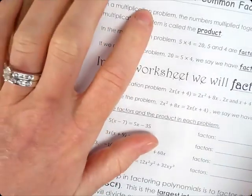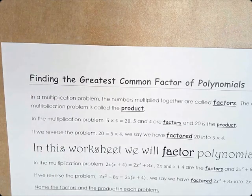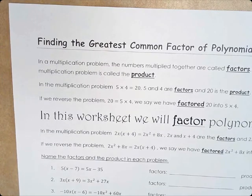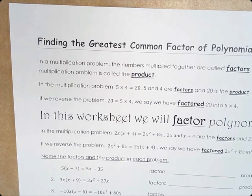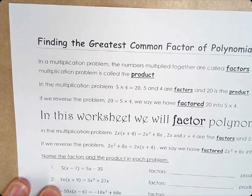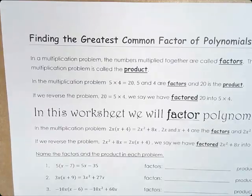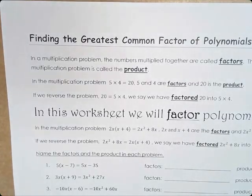So that is what factoring is. We are going to factor out the greatest common factor of a polynomial — we are going to undo distribution, and that is by factoring. In a multiplication problem, the numbers multiplied together are called factors, and the answer is called the product. For example, 5 times 4 equals 20: 5 and 4 are factors and 20 is the product. If we reverse the problem, we have 20 equals 5 times 4 — we say we have factored 20 into 5 times 4.